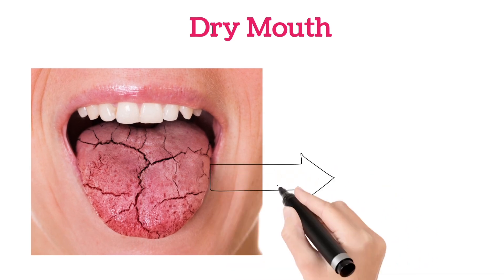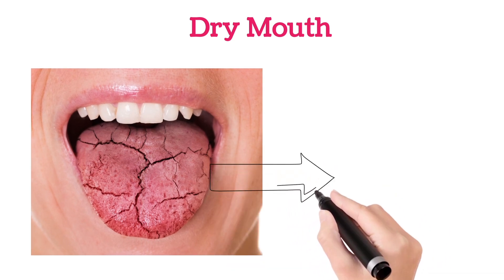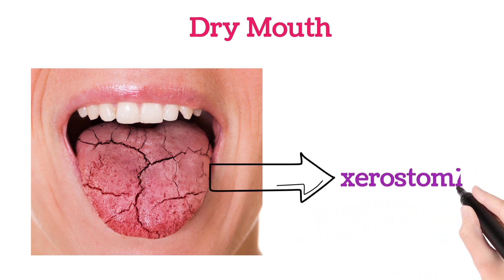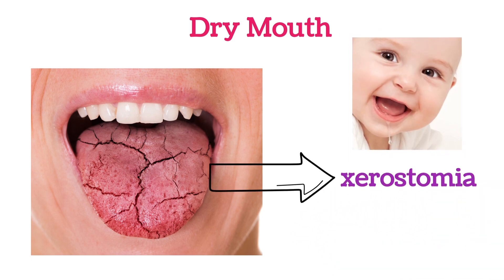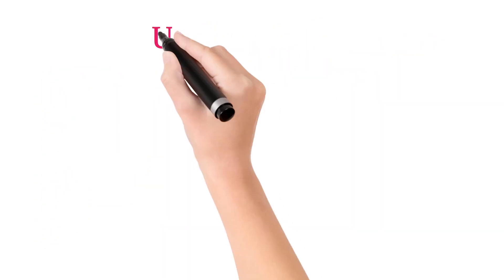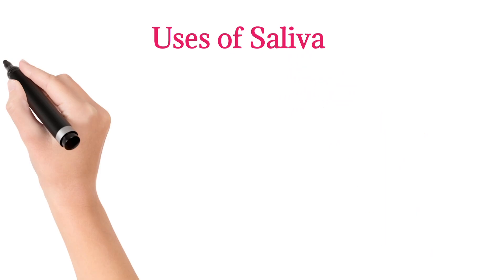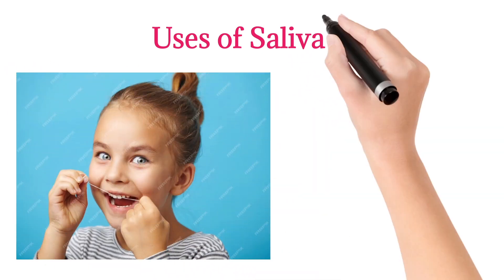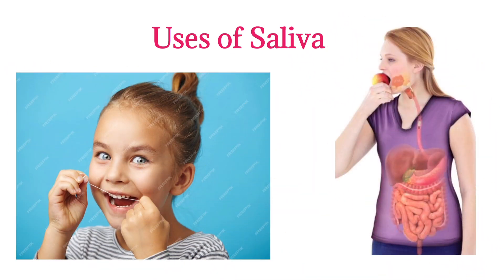Whenever there is dry mouth, in medical terminology, we call this condition as xerostomia. It usually occurs when there is low saliva in the mouth. Generally, the salivary glands produce saliva. It has so many functions for oral health and for the digestion of food. So whenever there is low saliva in the mouth, we call this condition as xerostomia.